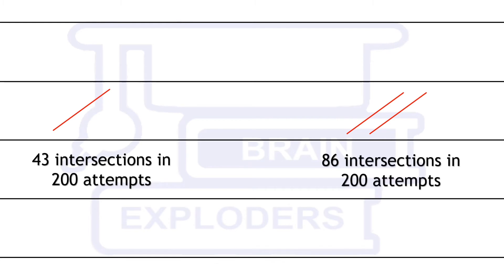If number of needles are doubled, number of intersections get doubled. Same number of intersections will be observed if these two needles are joined together. Each half of the combined needle will have 43 intersections.